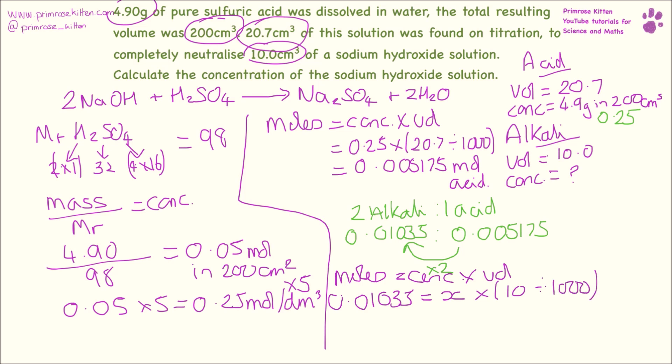We need to divide that by 1000, so what we end up with is 0.01035 divided by 0.01. That is going to equal to give us a concentration of 1.035 moles per decimeter cubed.